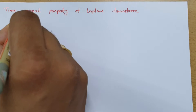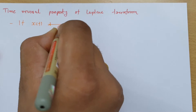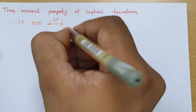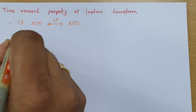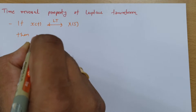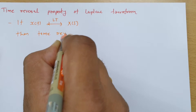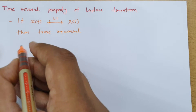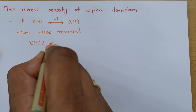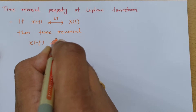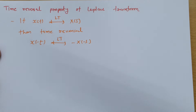So if we have signal x(t) and we take the Laplace transform of that signal, that is X(s), then we can say time reversal gives x(-t), and the Laplace transform of that has to be minus of X(-s).